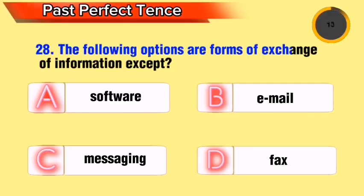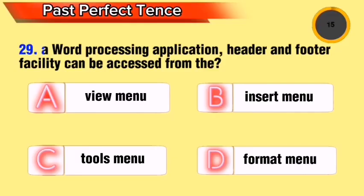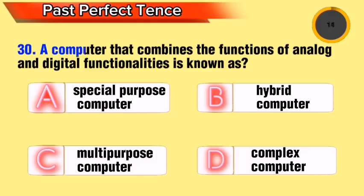Question 17: The following options are forms of exchange of information except which one? In a word processing application, the header and footer facility can be accessed from where? A computer that combines the functions of analog and digital functionalities is known as what?